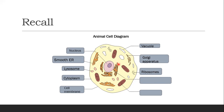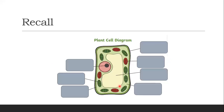This looks similar but contains small dots on the surface — this is your rough endoplasmic reticulum. It's rough because the rough endoplasmic reticulum contains ribosomes on it. And lastly, this structure with a double layer is the mitochondria. The very important function of mitochondria is to produce energy in the form of ATP.